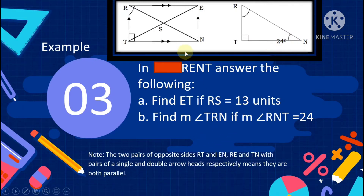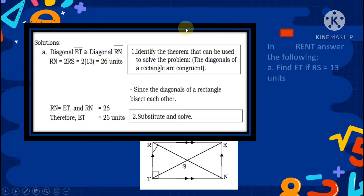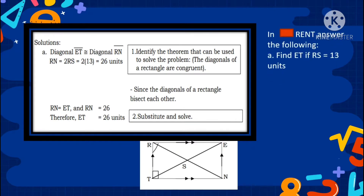Note the two pairs of opposite sides RT and EN. The arrows indicate they are both parallel. For letter A, diagonal ET is congruent to diagonal RN — by the theorem that the diagonals of a rectangle are congruent. Since the diagonals of a rectangle bisect each other, RN equals 2 times RS. So RN equals 2 times 13, which equals 26 units. Therefore ET equals 26 units.